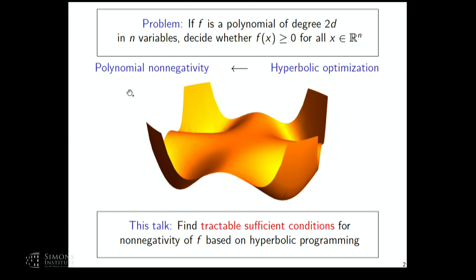There are going to be three parts to the talk. First, I'll explain what hyperbolic polynomials and hyperbolic optimization are—since it's the first talk of the workshop, it's a good opportunity to establish these. Then I'll move toward how to get non-negative polynomials from hyperbolicity naturally. The last part will be about understanding the relationship between hyperbolic certificates of non-negativity and sums of squares.